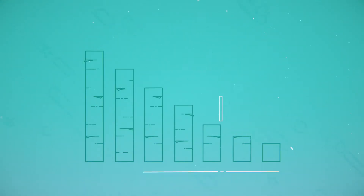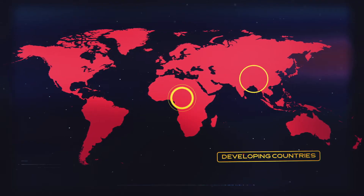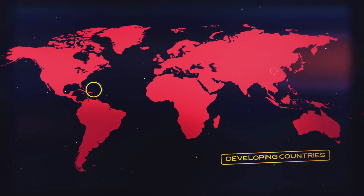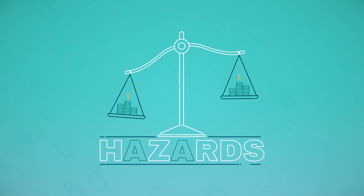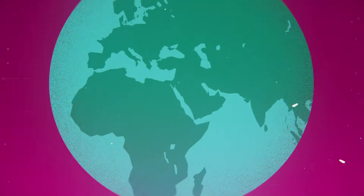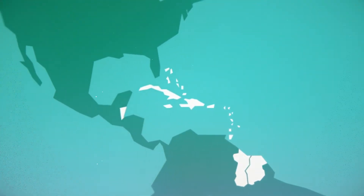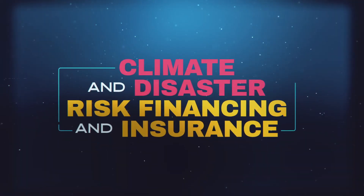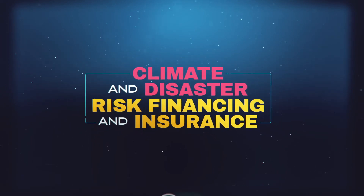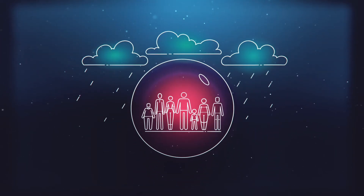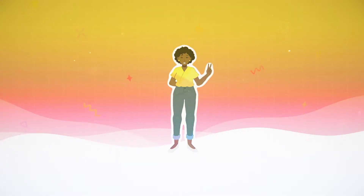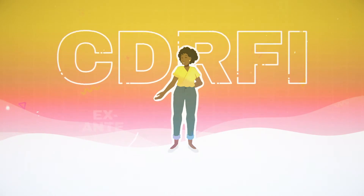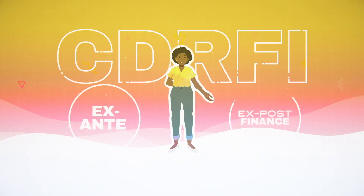As the financial losses accrued due to natural disasters continue to rise, developing countries experience the greatest impacts. Natural hazards generate significant economic risk and create major budget instability for small island developing states like the Caribbean. Climate and disaster risk financing and insurance help countries ensure that their populations are financially protected in the event of a disaster. The two main methods that CDRFI use are ex-ante and ex-post finance.